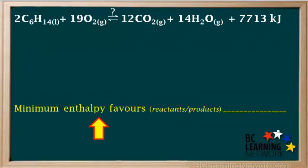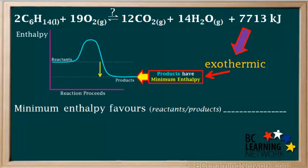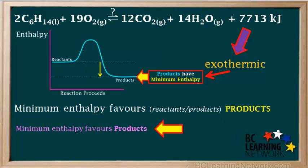Let's start with the first question: will minimum enthalpy favor reactants or products? We see that the heat term is on the right side of the equation, which tells us this reaction is exothermic. Sketching an enthalpy diagram for an exothermic reaction, we see that the products have minimum enthalpy, so the tendency toward minimum enthalpy favors the products.